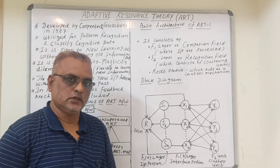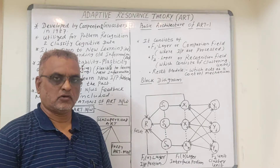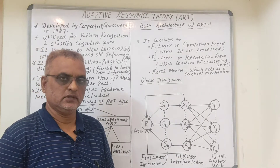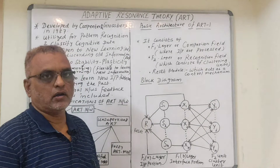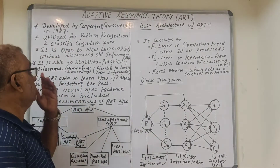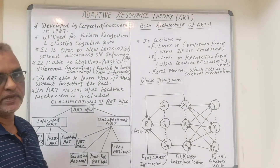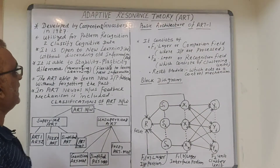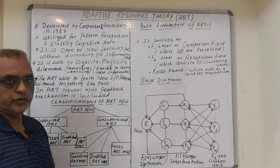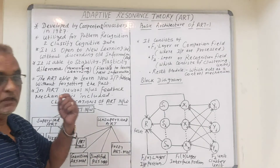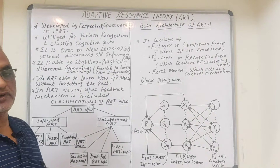Greetings to everyone. In this video we are going to discuss another very important concept from machine learning, that is Adaptive Resonance Theory, A.R.T. It was developed by Carpenter and Grossberg in the year 1987. It is mainly utilized for pattern recognition and to classify cognitive data.